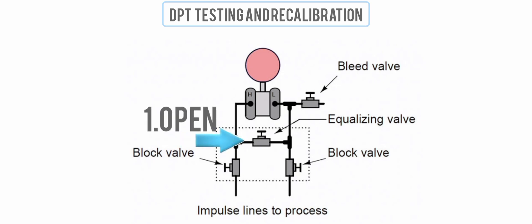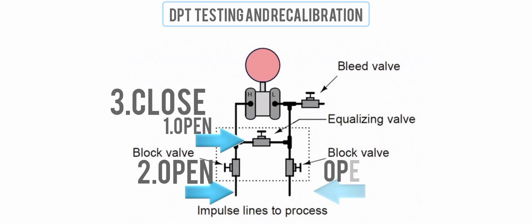By opening the equalizing valve first, then opening the high pressure block valve second, followed by closing the equalization valve, and finally opening the low pressure block valve.